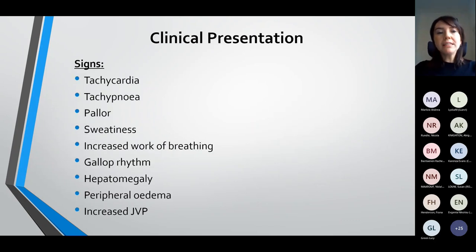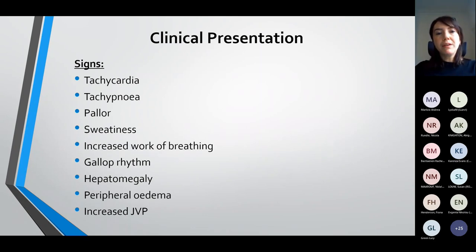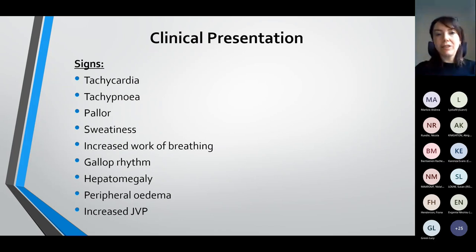In terms of signs, they can be quite tachycardic and tachypneic, and one of our initial considerations is how stable and how acutely unwell they are. These signs can point us one way or another. So tachycardia, tachypnea, pallor and sweatiness, increased work of breathing — we often see patients with a gallop rhythm, marked hepatomegaly, peripheral oedema, and in older children we may see an increased JVP.